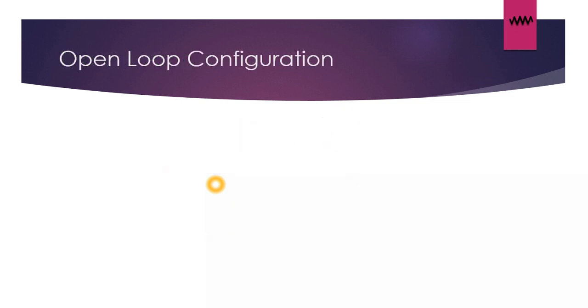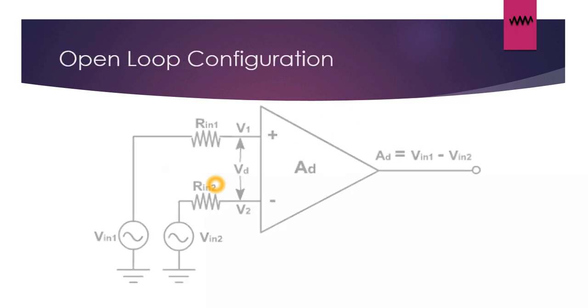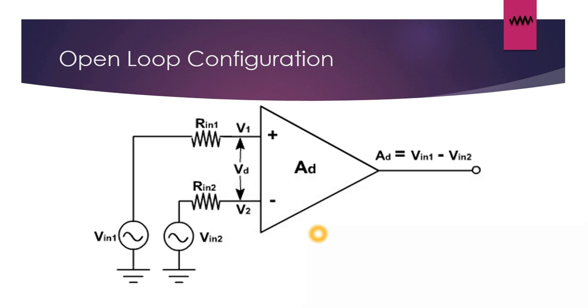Now let us see the open loop configuration of the op-amp. As open loop suggests, there is no loop in this diagram. So here we have given two inputs at the non-inverting and the inverting terminals of the op-amp. Now basically the operational amplifier is a differential amplifier. It works as a differential amplifier when in open loop configuration.